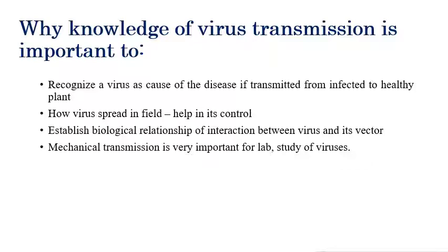Knowing how the virus spreads from field to field helps control it. If it is transmitted by a vector, controlling the vector controls the disease. If transmitted by seeds, avoiding planting infected seeds prevents the disease. Knowledge of virus transmission also helps prevent spread from infected fields to uninfected fields, and helps establish the biological relationship between virus and vector involved in plant viral disease transmission.